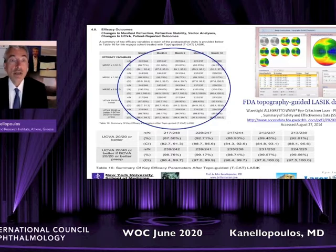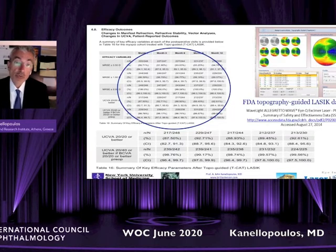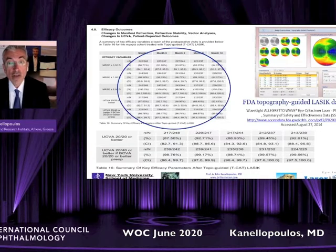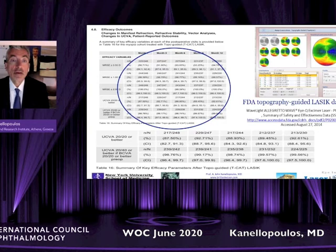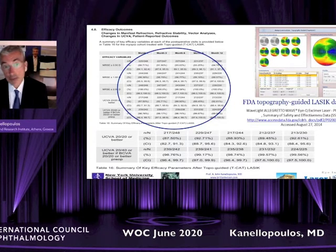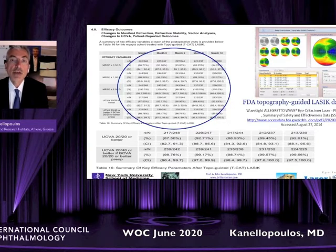It was not until Alcon's FDA study with topography guided — which was performed on virgin myopic eyes, not as a therapeutic tool, but as a primary tool in treating myopia with LASIK — that we saw something very interesting. A very large percentage of eyes, larger than any other platform that went through the FDA, showed a gain in visual acuity, a gain in lines of vision from corrected to uncorrected postoperatively. This landmark study drew our attention to using custom topography-guided ablations even in virgin eyes, validating that it can give you better visual outcomes.